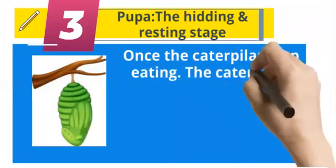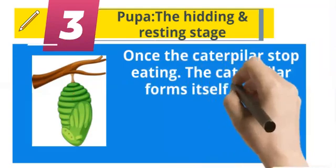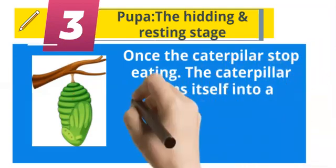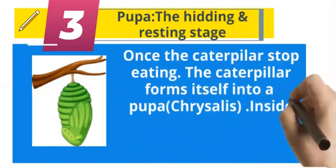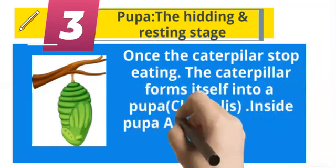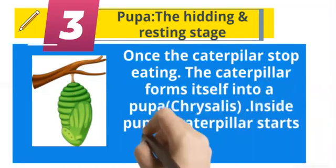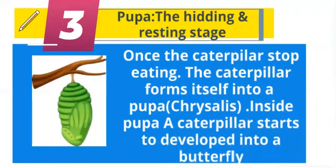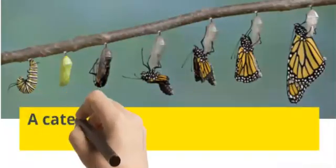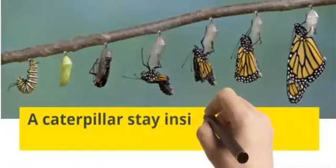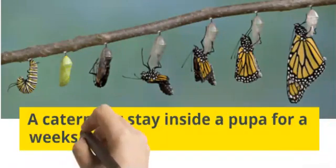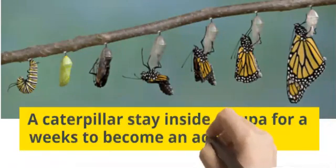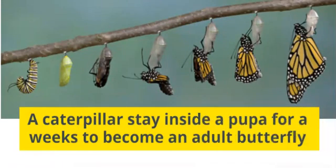Third stage: pupa — the hiding and resting stage. Once the caterpillar stops eating, it forms itself into a pupa, chrysalis. Inside a pupa, a caterpillar starts to develop into a butterfly. A caterpillar stays inside a pupa for weeks to become an adult butterfly.